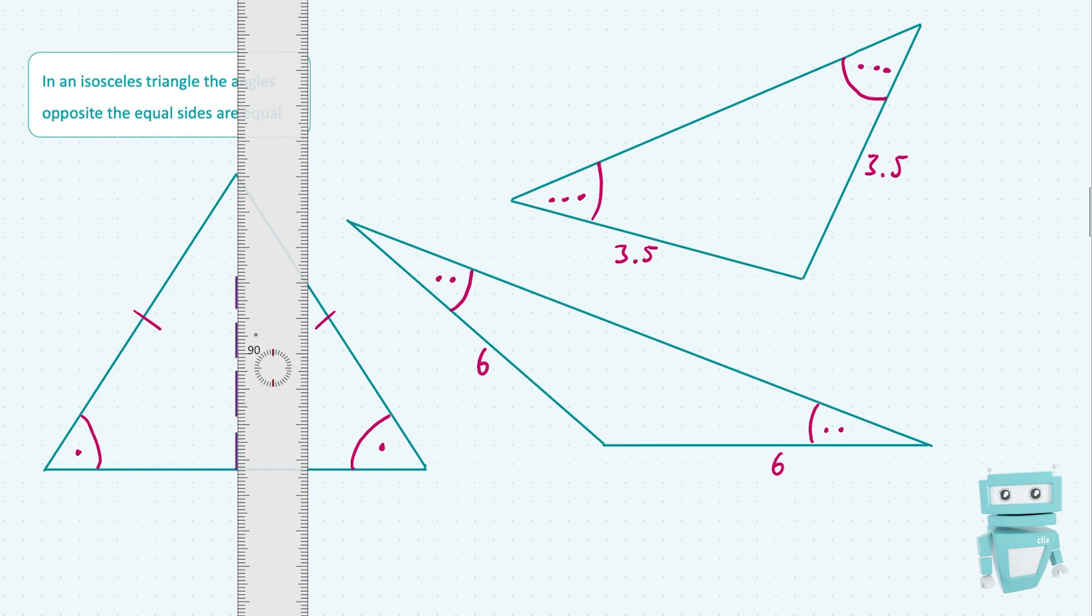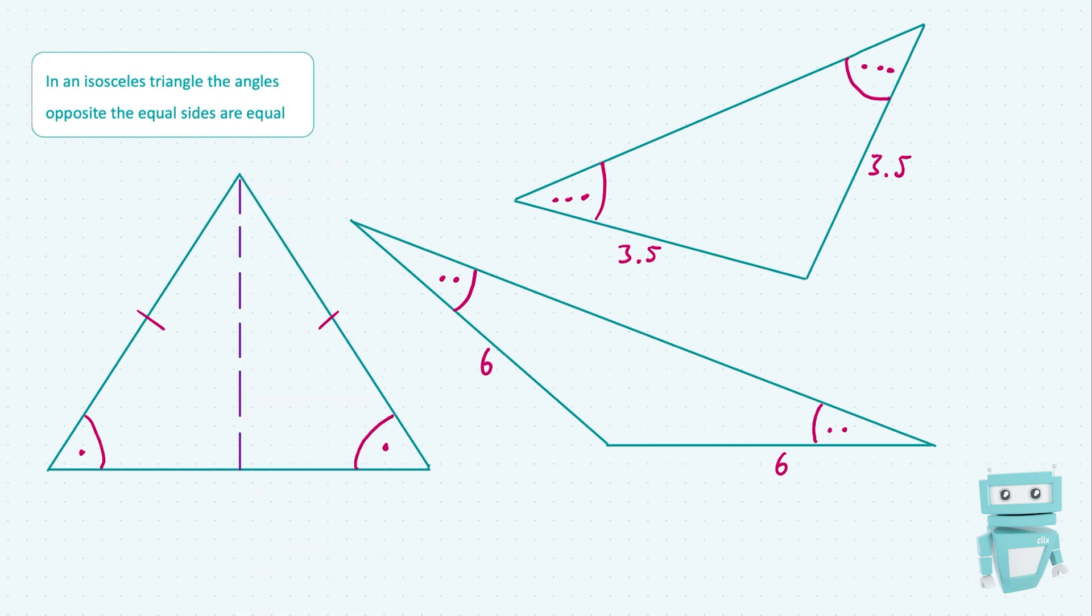As you can see here in the first case I've just drawn a purple dotted line straight down from the top angle to the bottom, and now we've created two mini triangles in which case the purple dotted line is a side they have in common. We know that they've got two equal angles down here.